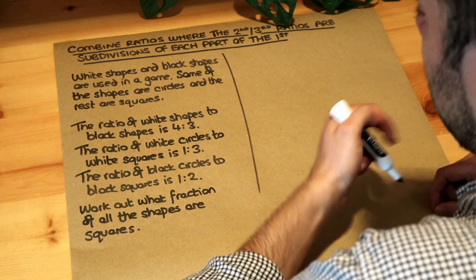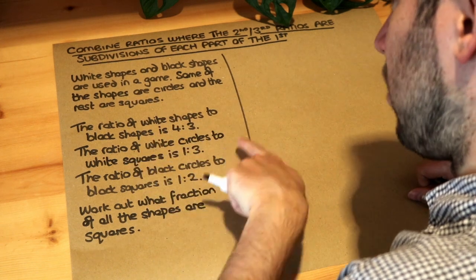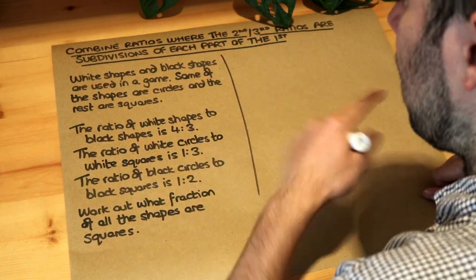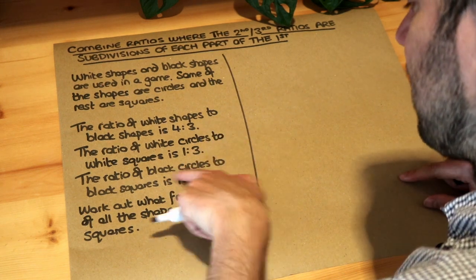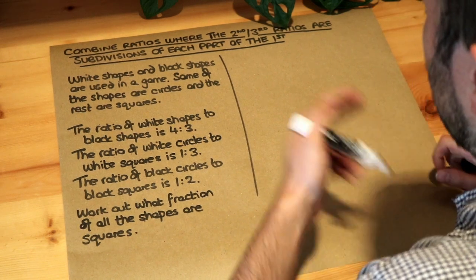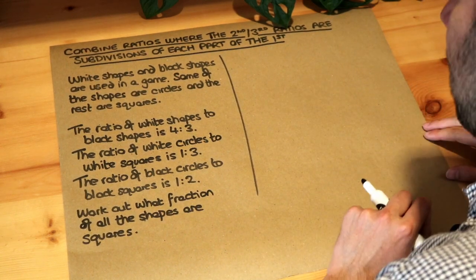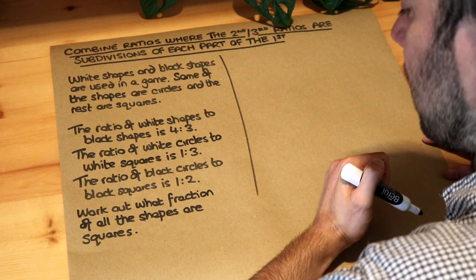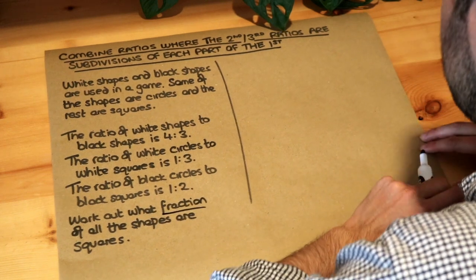Now this is a bit like the previous video I did on this with subdivisions — we have a subdivision of the white shapes into white circles and white squares, but this question is a bit harder because we're also splitting the black shapes into a ratio of black circles to black squares as well. What I did in the previous video is to represent these ratios as fractions, because it makes it easier to combine them together, and it does say we want to find what fraction of all the shapes are squares.